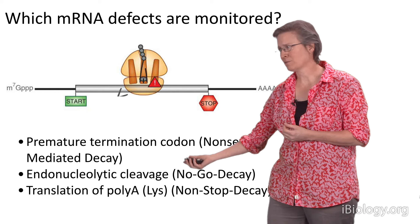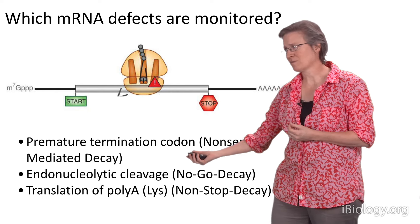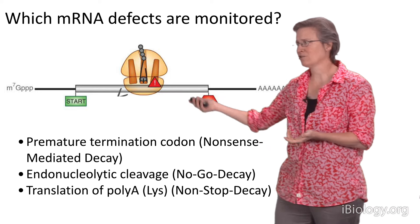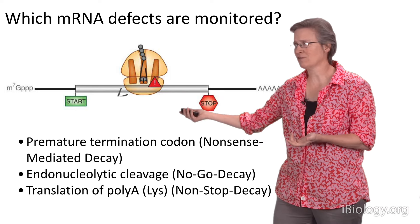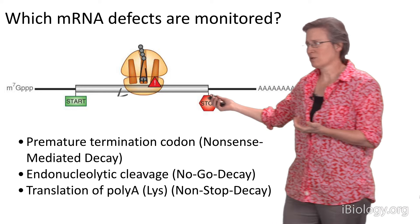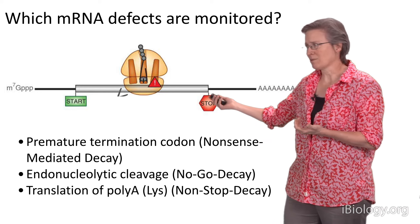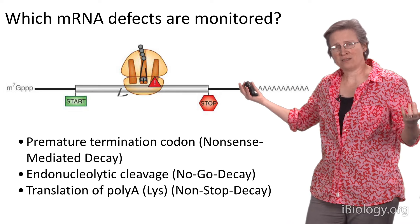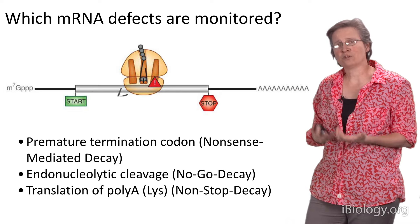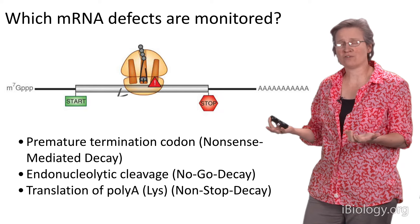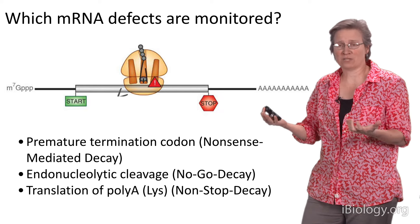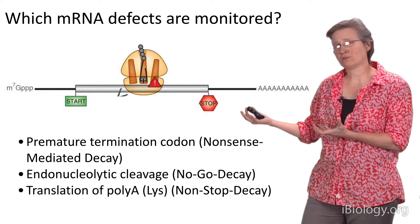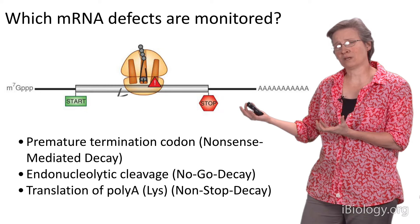Another example would be an endonucleolytically cleaved messenger RNA. If the messenger RNA picked up a cleavage in the middle, the ribosome would never reach a stop codon, and would be stuck without the ability to promote normal termination. This is a messenger RNA the cell would like to get rid of, along with the incomplete polypeptide product.